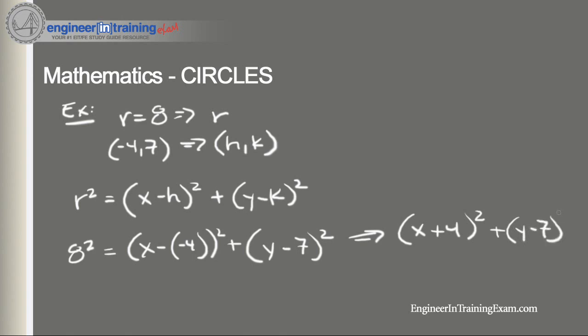So this is an equation that's telling us that the circle is located at (-4, 7) and has a radius of the square root of 64, which is 8.